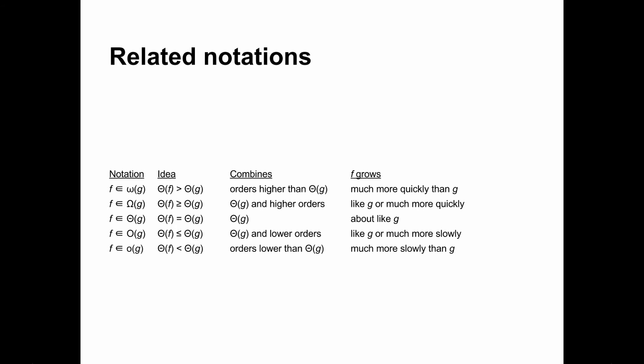Here are several related asymptotic notations. From top to bottom, they are little omega, big omega, big theta, which we've already seen, big O, and little o. The o's are actually omicrons, but there's no way to tell the difference, and everyone says o.